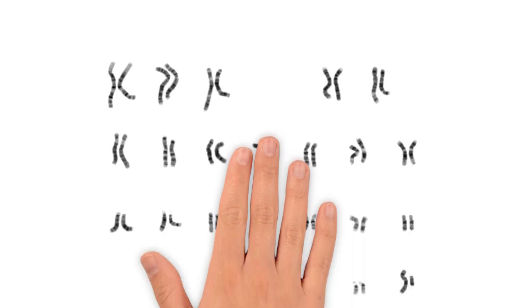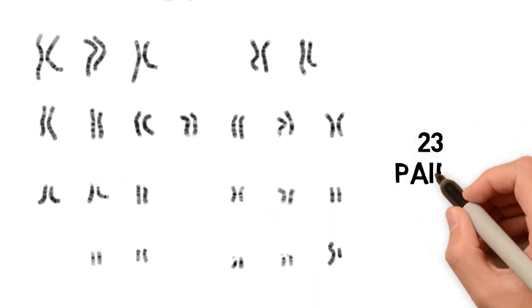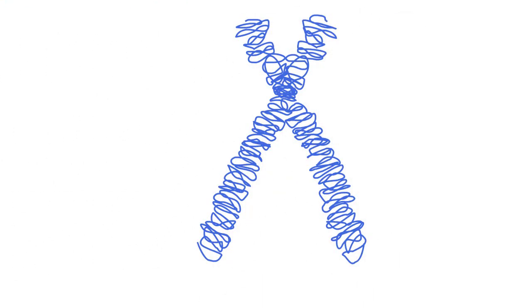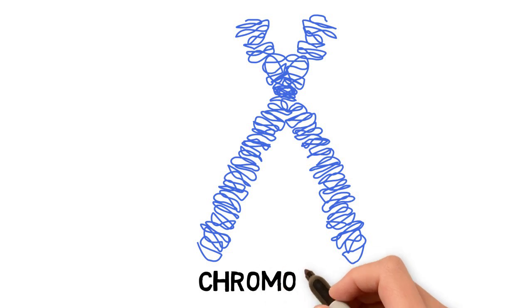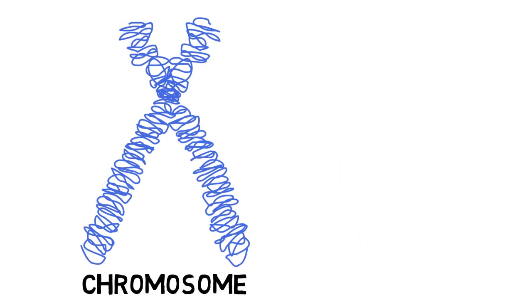Genomes are further divided into chromosomes. The human genome, for example, has 23 pairs of chromosomes. Each one of them is formed by a molecule of DNA, which stands for deoxyribonucleic acid.